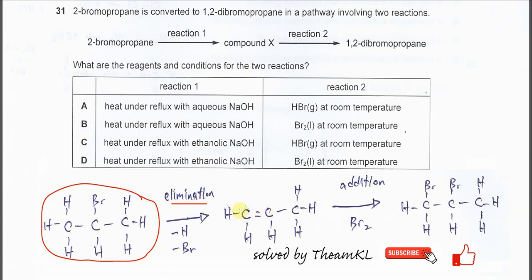So it will undergo elimination and after that the addition of this bromine needs to be there. It means the bromine molecule now will add to the propene to form this 1,2-dibromopropane.